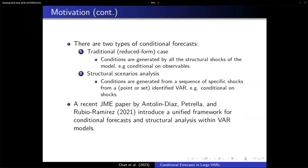There are two types of conditional forecasts. The traditional reduced form case — the example I just gave — is called conditional on observables, where conditioning is generated by all structural shocks in the model. The other type is structural scenario analysis, which is conditional on shocks. For example, forecasting real GDP conditioning on the policy shocks. There is a recent JME paper by Antonio Diaz and co-authors producing a unified framework for conditional forecasts and structural analysis within the VAR framework.